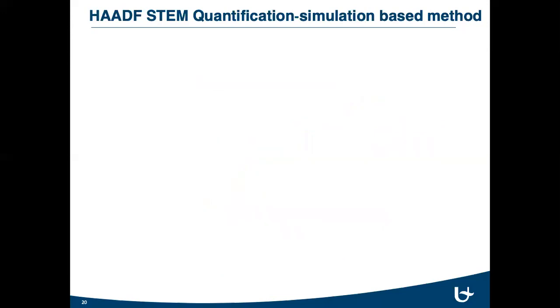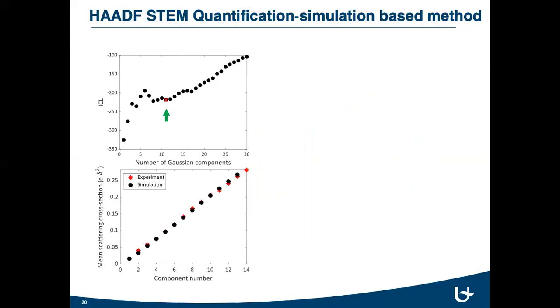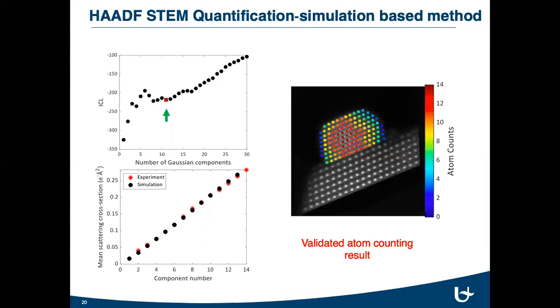And if we go back to the order selection criterion, when we select the ICL minimum at 11, an excellent match is obtained between the simulated and experimental scattering cross-section values, which validates our atom counting results.